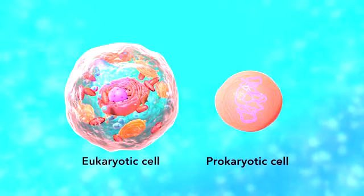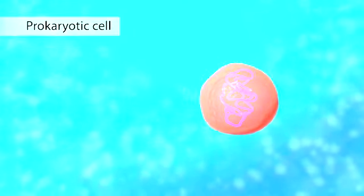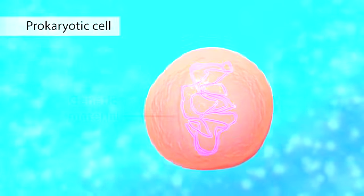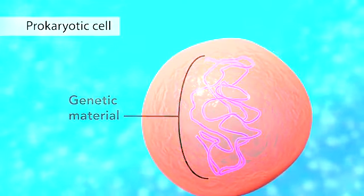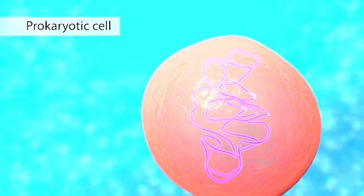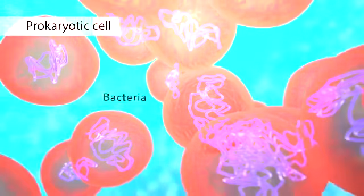The second category is prokaryotic cells. They don't have a nucleus or membrane enclosed organelles. They do have genetic material but it's not contained within a nucleus. Prokaryotic cells are always one-celled or unicellular organisms such as bacteria.